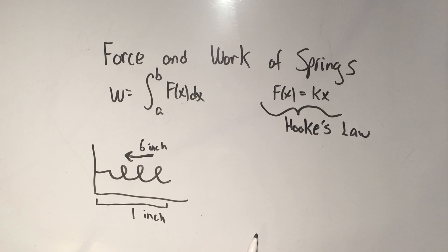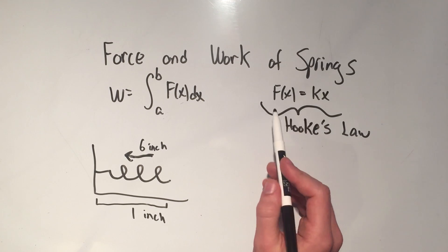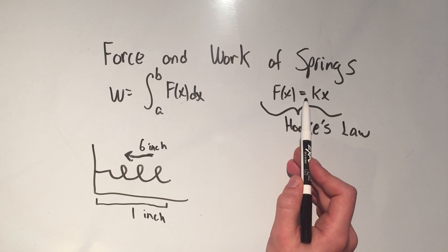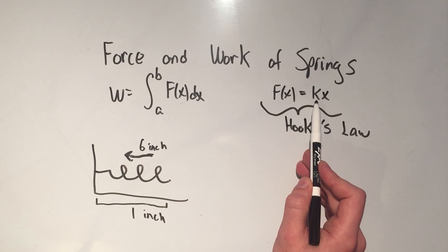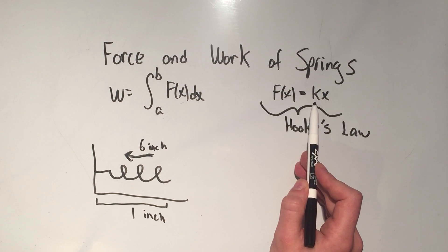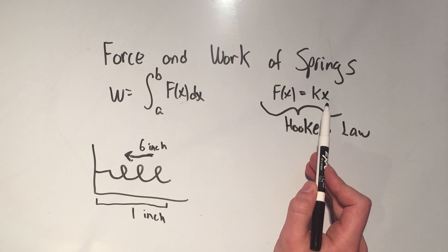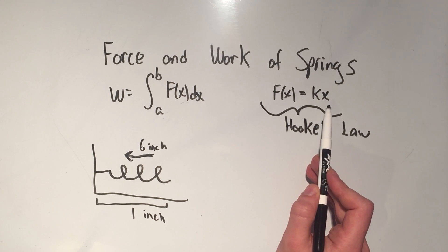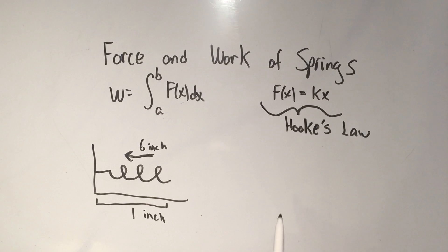And if you're talking about springs, then the force of a spring is k, which is called the spring constant, times x. And x is the displacement of the spring from its natural position. And this is called Hooke's Law if you're into naming things. So thanks a lot, Hooke.